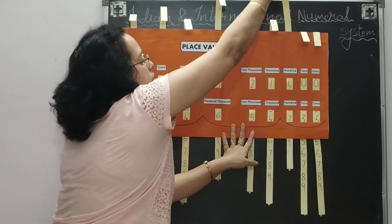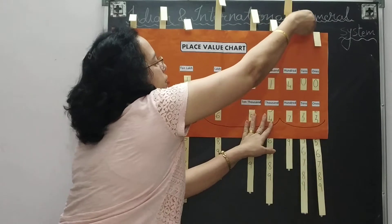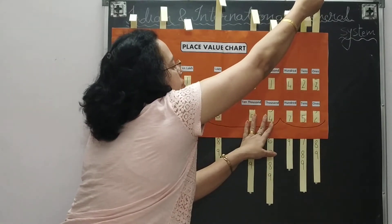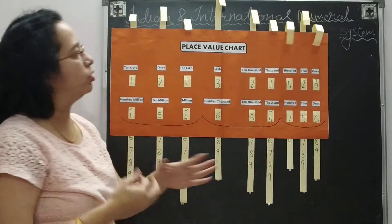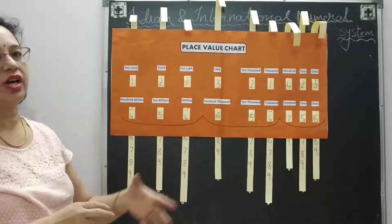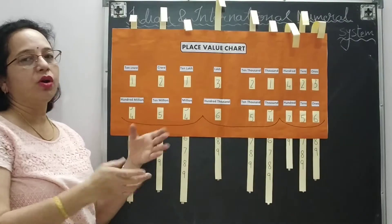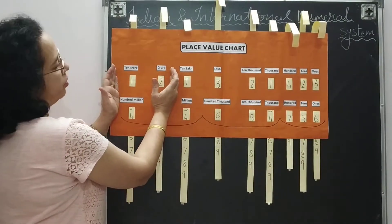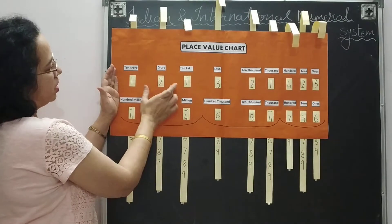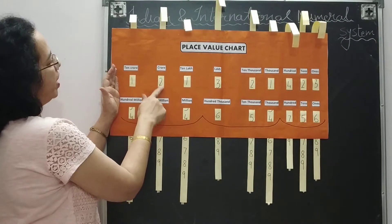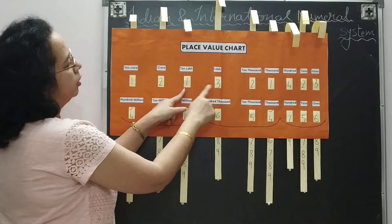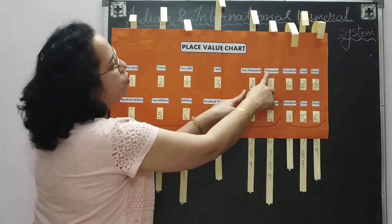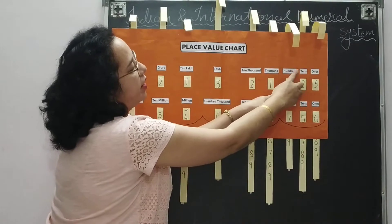Students can also do this activity in their free periods. If other teachers come for arrangement, those teachers can also use this chart to engage students. So how we will read the first number: after two digits, one, two — twelve crore, thirteen lakh, twenty-one thousand, four hundred twenty-three.